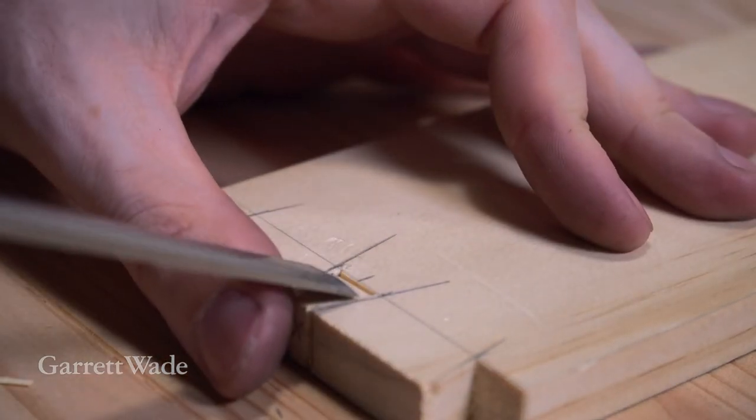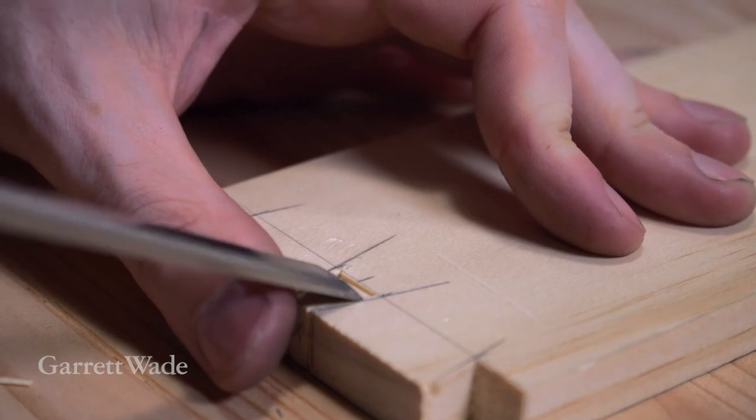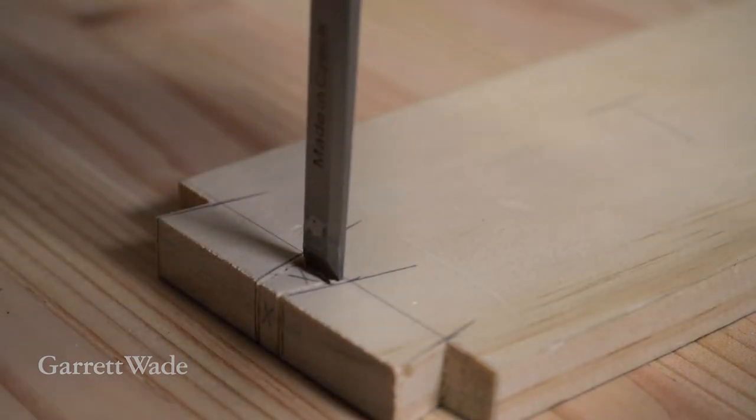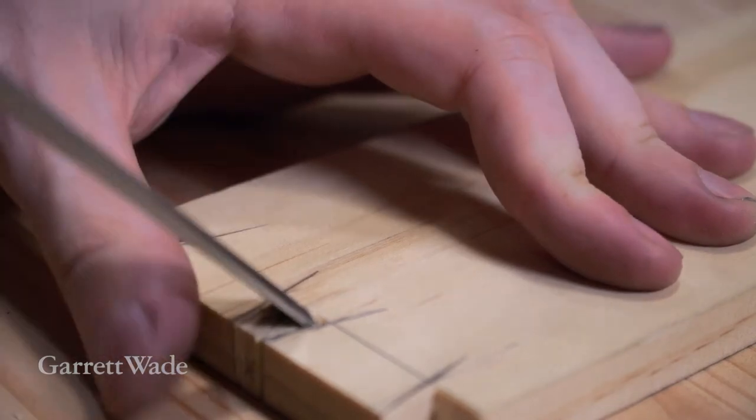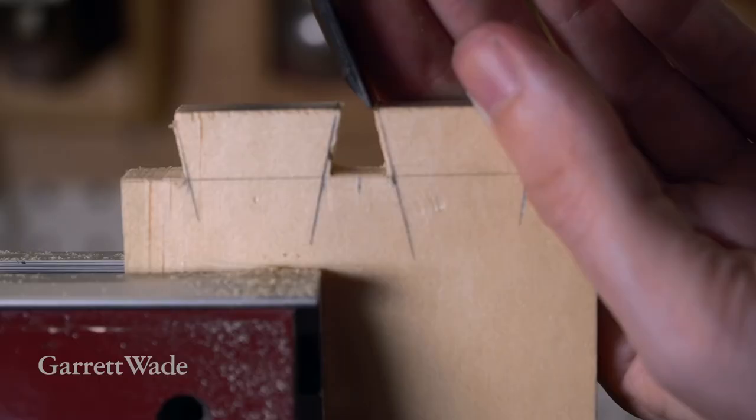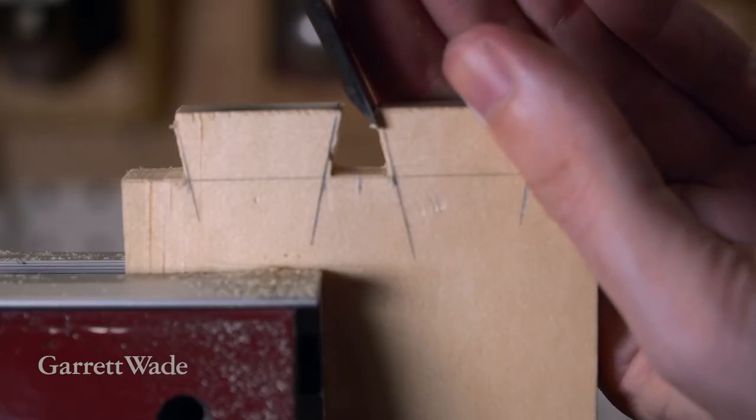I'm just going to work my way down from both ends. Just light tap to the mallet. Now I can clean up these tails with a chisel.